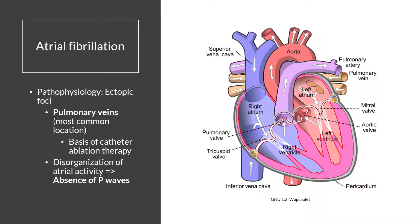Atrial fibrillation is an example of a supraventricular tachyarrhythmia, and therefore it is going to originate from an ectopic foci located above the ventricle. In particular, the most common location of origination of this abnormal rhythm is going to be the pulmonary veins, as shown in the schematic on the right-hand side of the presentation. Therefore in AFib, our rhythm originates from these pulmonary veins rather than from the sinoatrial node. These ectopic foci in the pulmonary veins are the basis for catheter ablation therapy, in which we can ablate this abnormal ectopic foci.